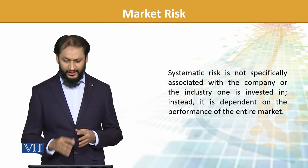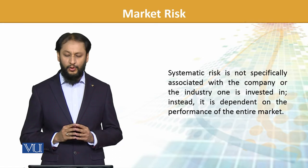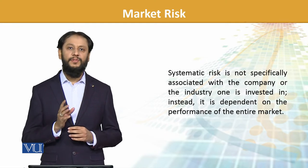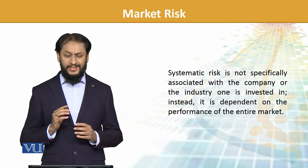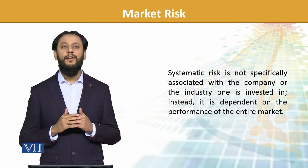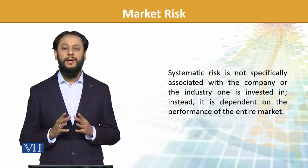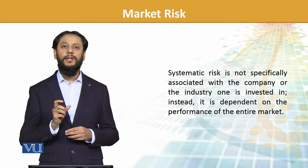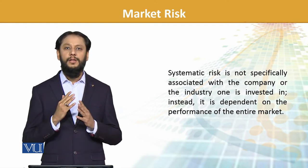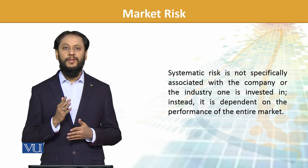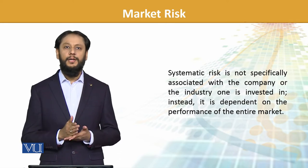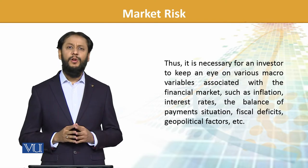Systematic risk is not specifically associated with a particular company or industry you are invested in. It is not about a company-specific risk or an industry-specific risk. Instead, it depends on the performance of the entire market overall. That is referred to as systematic risk. Individual company risk is called unsystematic risk, which we can diversify away by having a well-defined portfolio — unsystematic or specific risk gets diversified — but market risk stays.